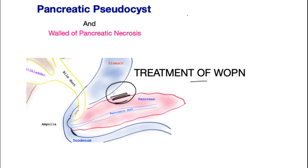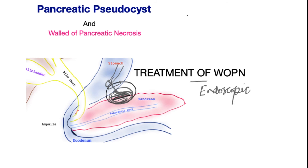What about a walled-off pancreatic necrosis with dead pancreas inside? For these types of cysts, not only is drainage of the cyst important, but mechanically this dead pancreas needs to be removed, otherwise it is prone to infection and complications. This can be performed through the endoscopic route by inserting the endoscope, parking it next to the cyst, making a big enough opening in the cyst to allow insertion of the endoscope, and then mechanically scooping the dead pancreas out.